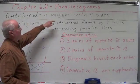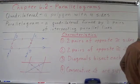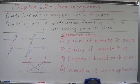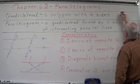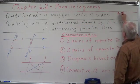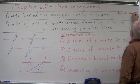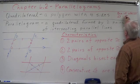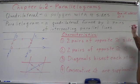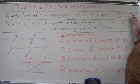A quadrilateral is a polygon with four sides. What is the sum of the interior angles? It equals 360 degrees because we have two triangles.